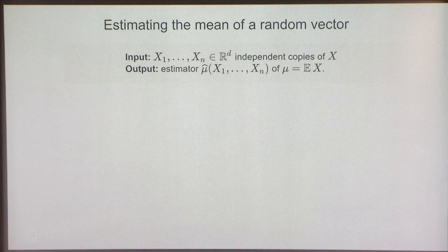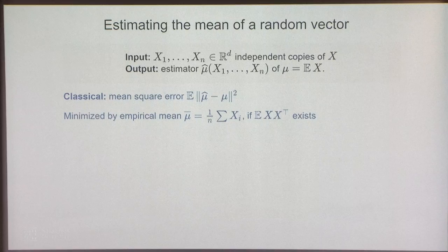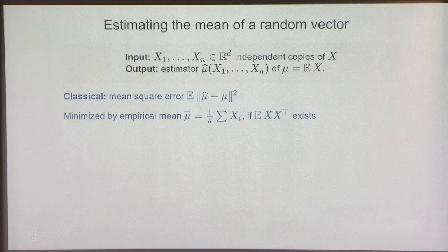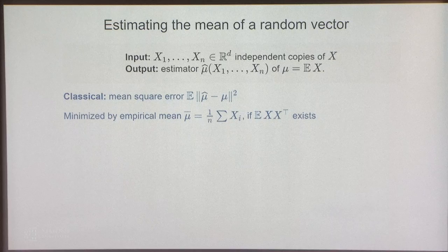Of course, probably everybody's thinking: why don't you just use the empirical mean and move on? In many situations, the empirical mean is a good estimator of the population mean. But the best estimator depends on what you want. If you want small mean squared error, and you assume the variance of x exists — a pretty mild assumption — then the mean squared error is minimized among all possible estimators by the empirical mean.